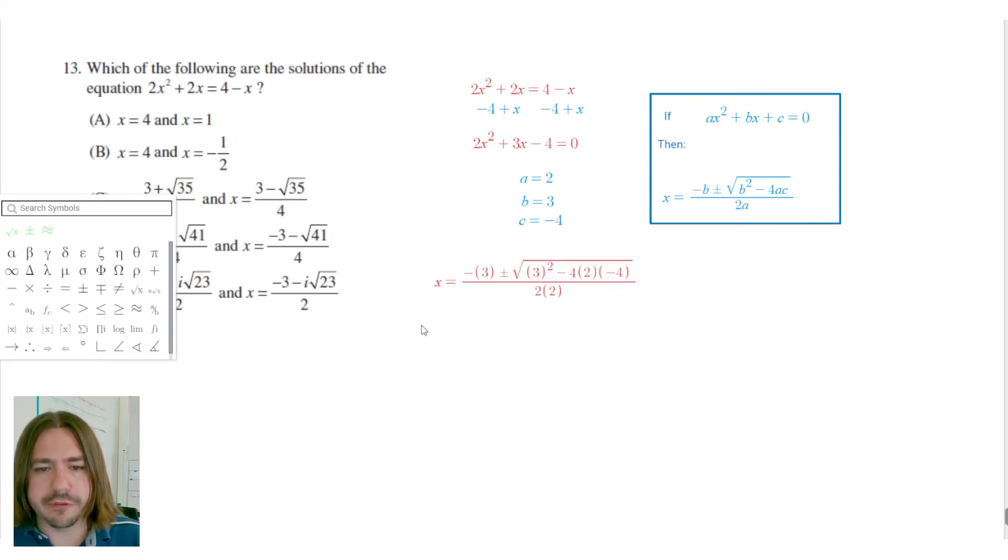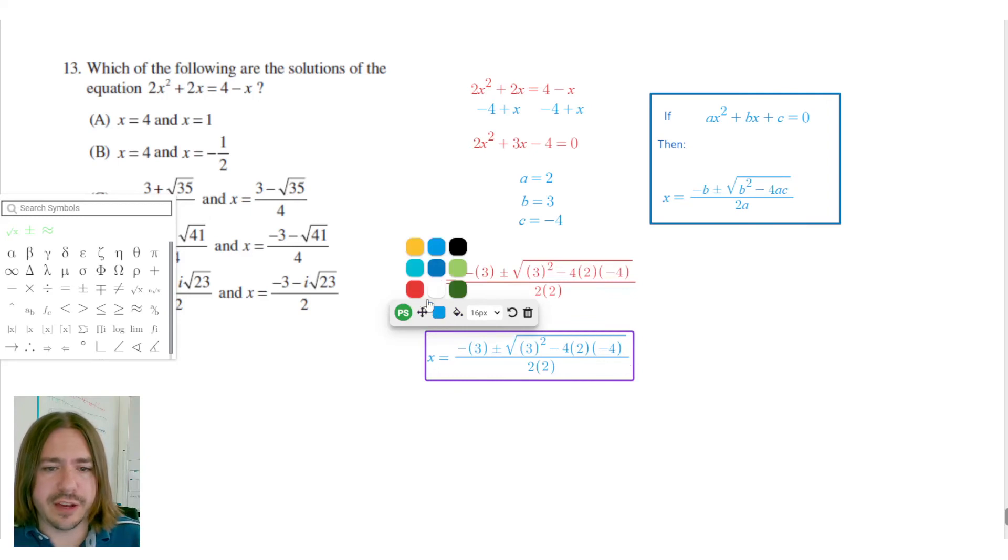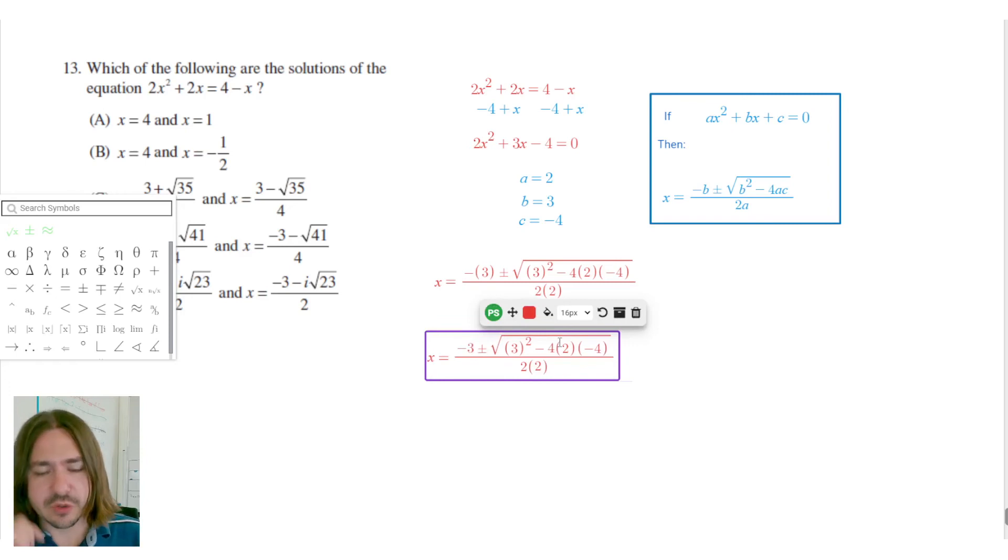So from there, we're just going to simplify. Negative 3 is just that, it's just negative 3. So negative 3 plus or minus the square root of, and 3 squared is 9.